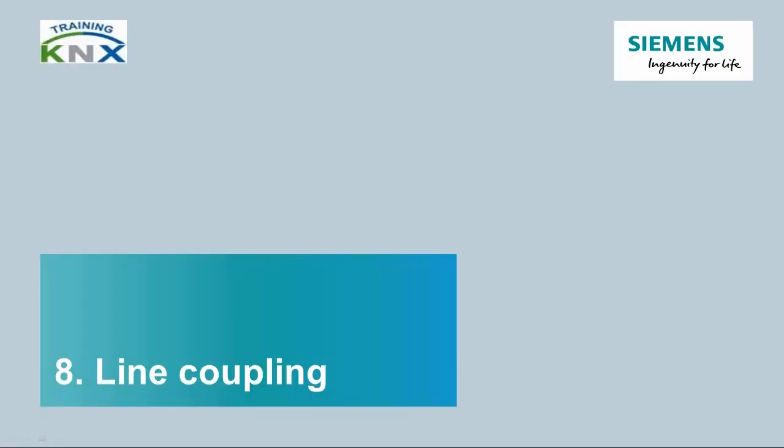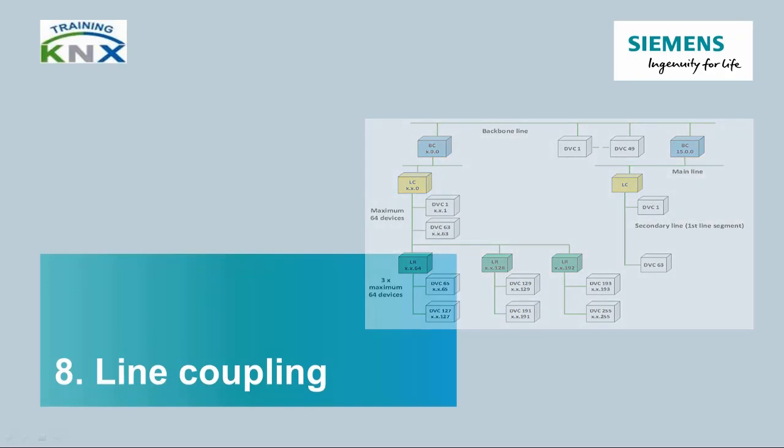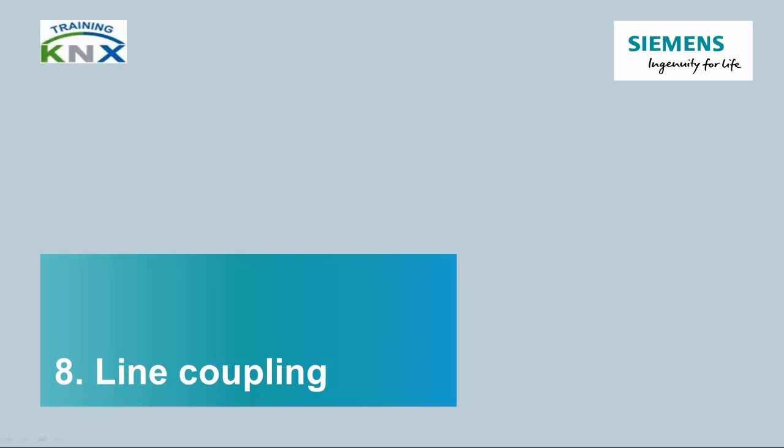Welcome back to the KNX basic course. Last chapter: Line Coupling. This chapter repeats and deepens the knowledge about the network structure of the KNX system already taught in the chapter Topology. It deals in particular with the coupler devices and their properties.